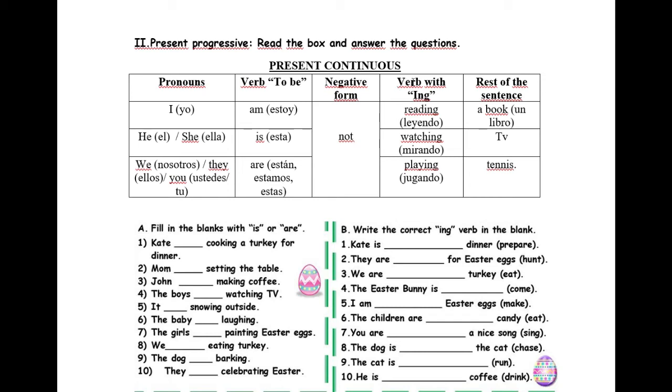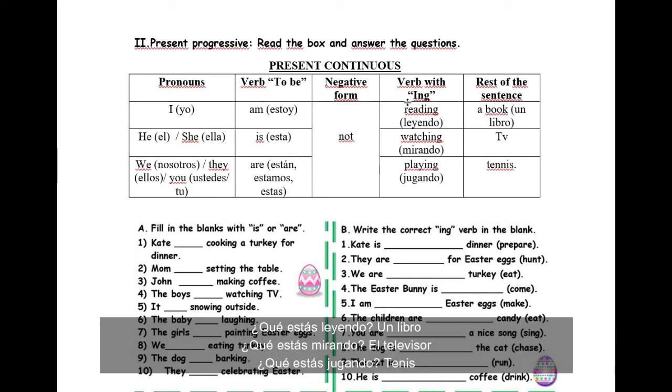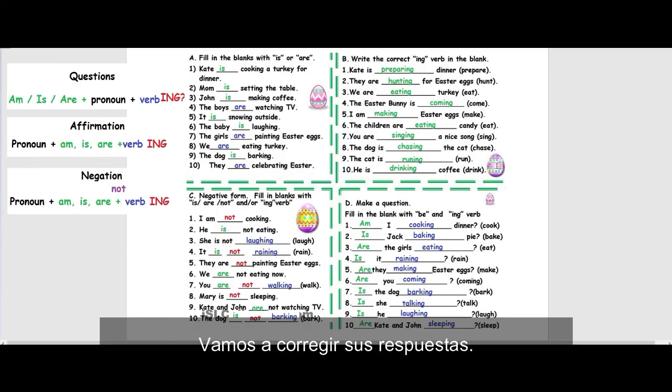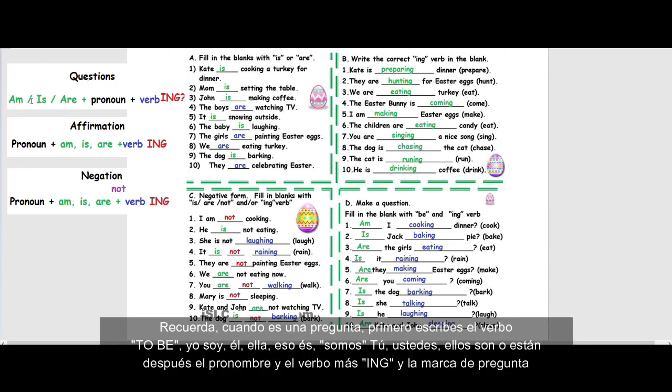Then, the verb with ing at the end. Reading, watching, playing, and the rest of the sentence. Let's check your answers. Remember, when it's a question, you have to add first, the verb to be, am, I, am, is, he, she, it, is, are, you, we, are. The pronoun, I, he, she, it, you, we, they.